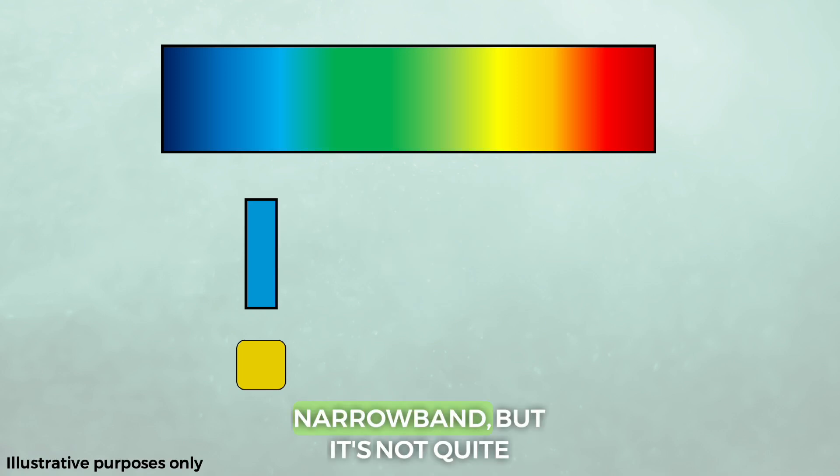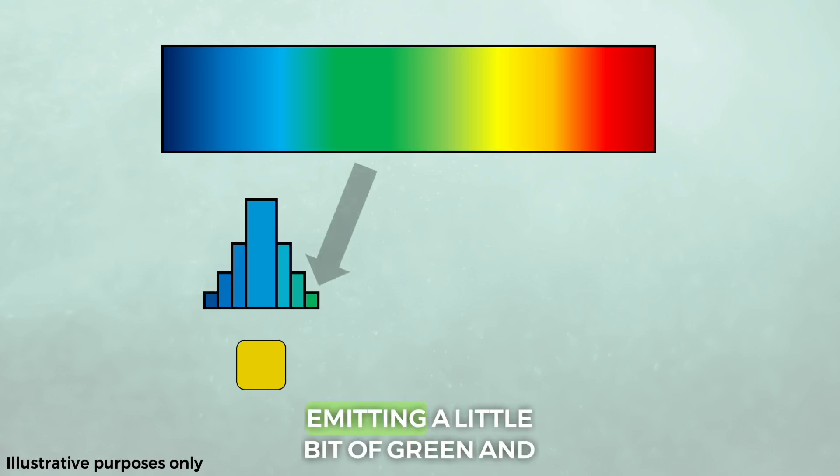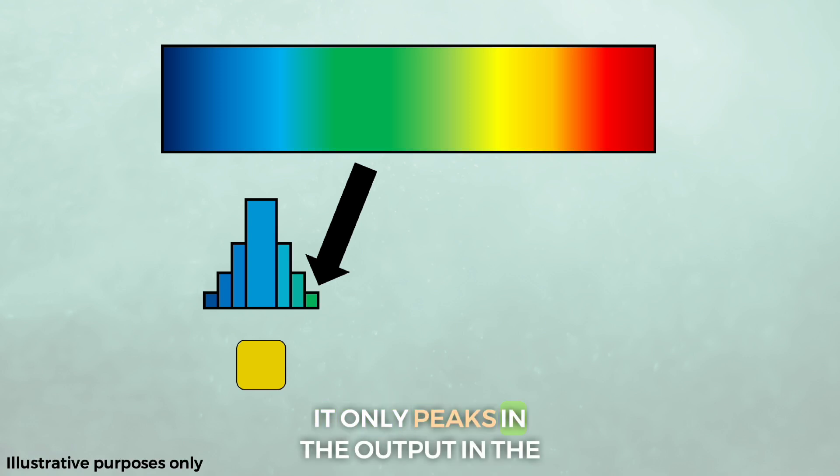The truth is that LEDs are narrowband, but it's not quite what I showed in the previous video. It's more like this. This example blue diode is actually emitting a little bit of green, and it only peaks in the output in the blue.